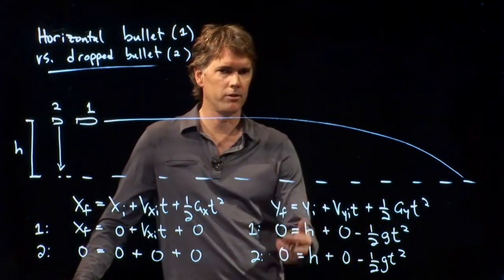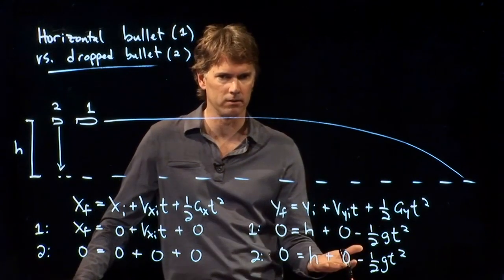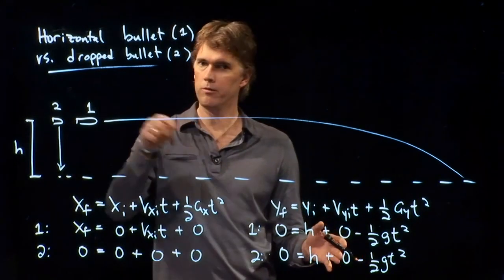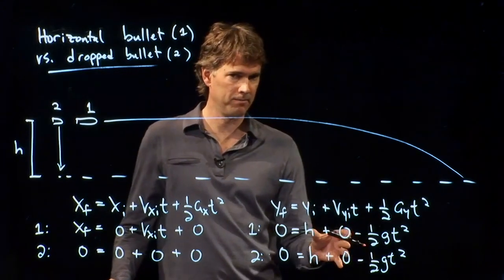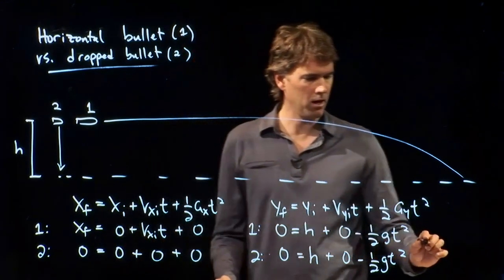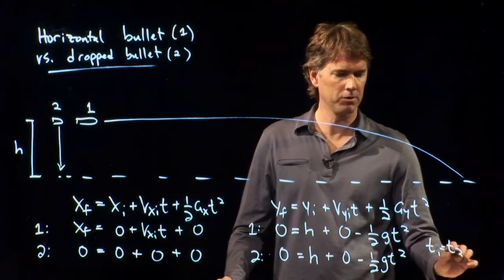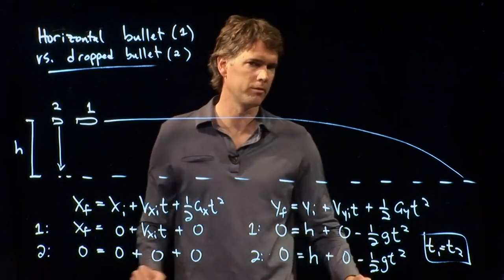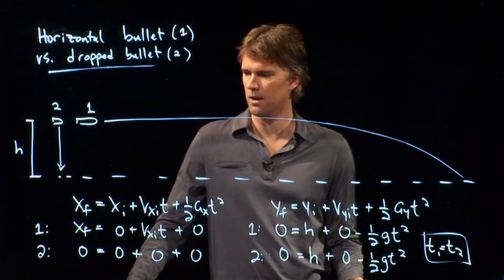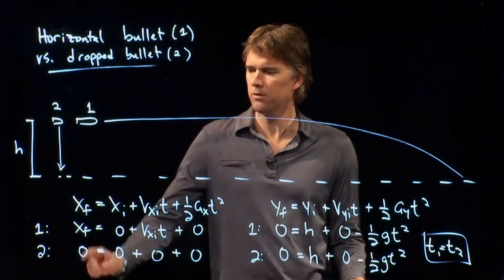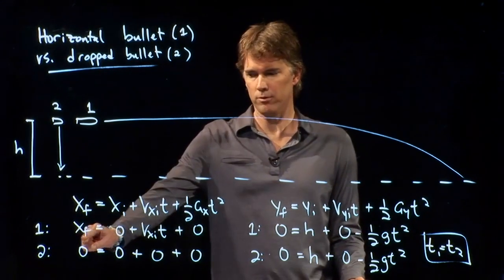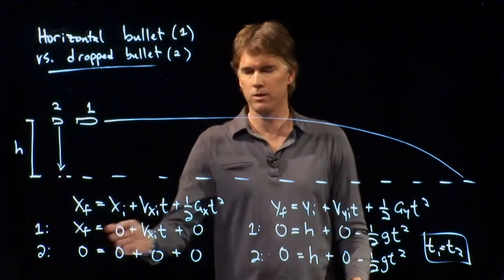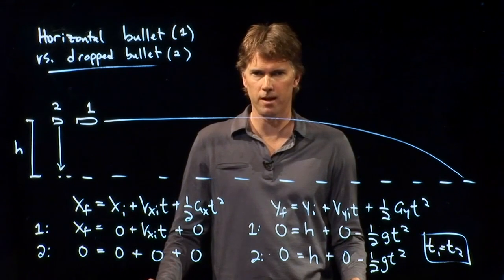Those two y-equations are exactly identical. The y-equations for the fired bullet versus the dropped bullet are exactly the same. So you can say t1 has to equal t2. And in fact, you can solve one of them to get t — it's not that complicated. The difference is in the x-equations: one bullet travels very far in the x direction, and the other doesn't travel anywhere in the x direction.